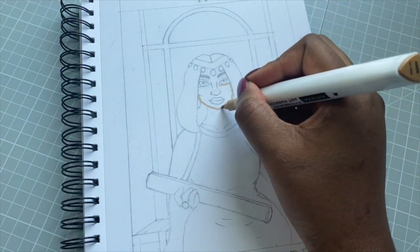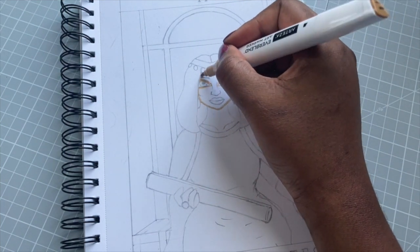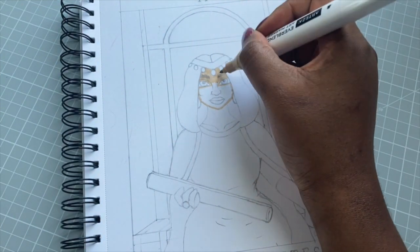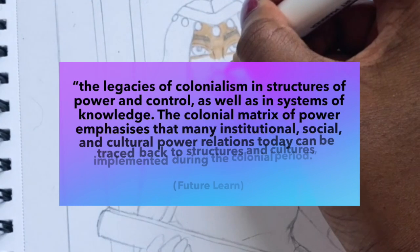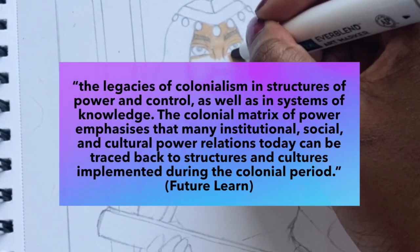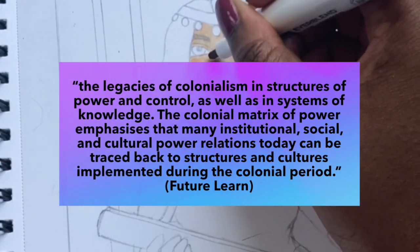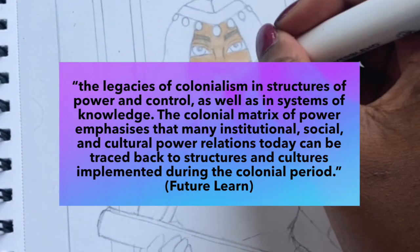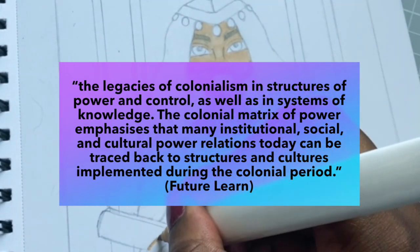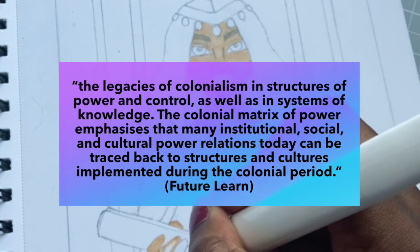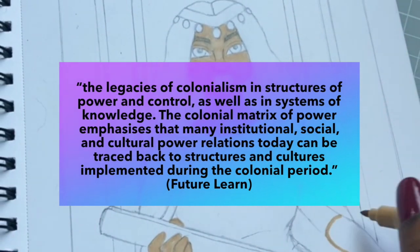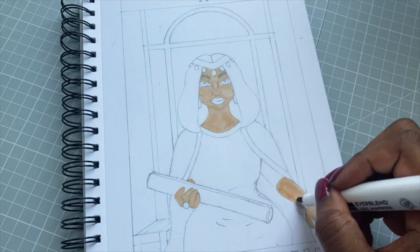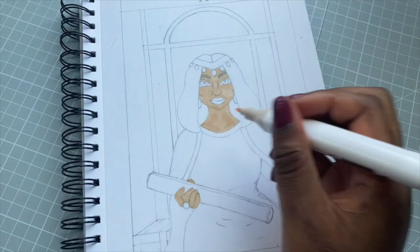Coloniality is a concept coined by the Peruvian sociologist Aníbal Quijano to describe the legacies of colonialism and structures of power and control, as well as systems of knowledge. The colonial matrix of power emphasises that many institutional, social and cultural power relations today can be traced back to structures and cultures implemented during the colonial period. Coloniality is also sometimes referred to as the coloniality of power or the colonial matrix of power.